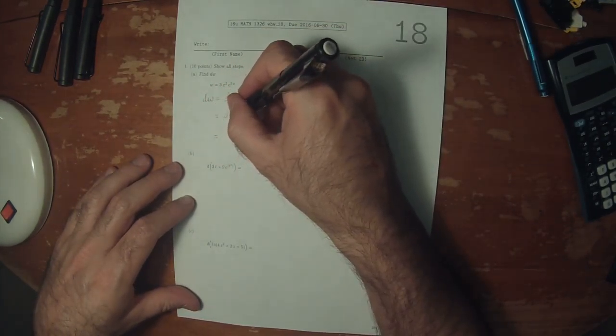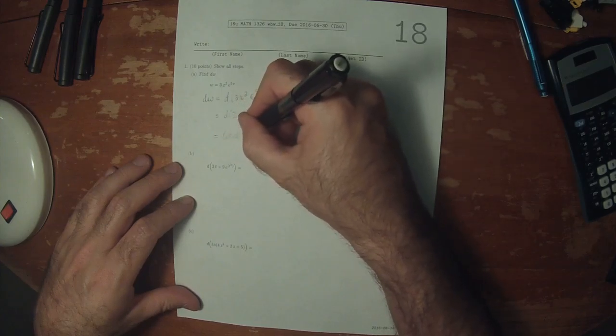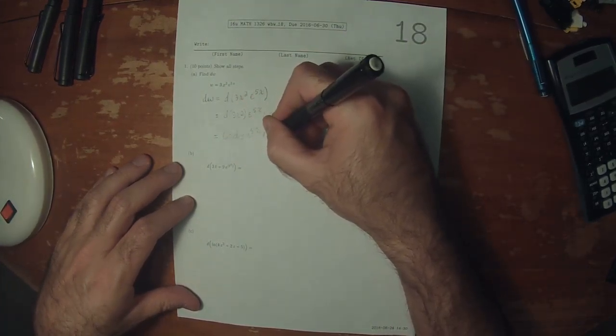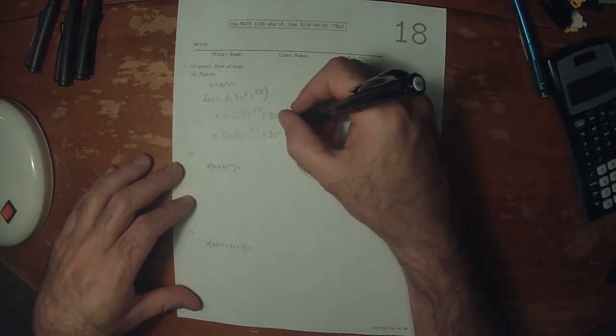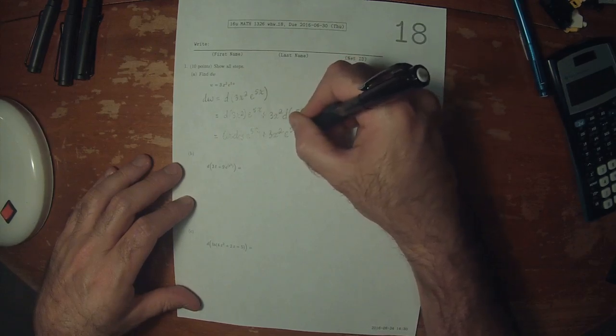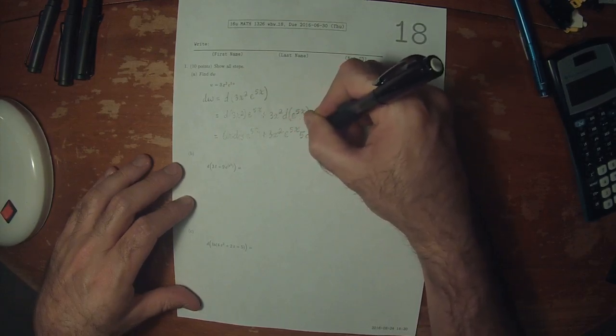This will be 6x dx e to 5x and then plus 3x squared and then e to 5x multiplied by 5dx.